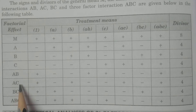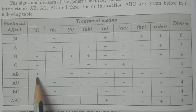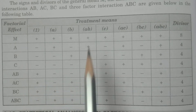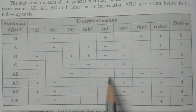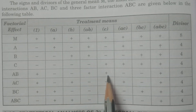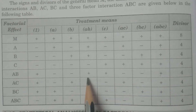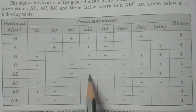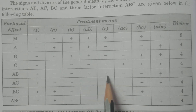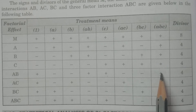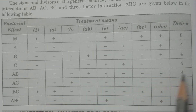Now, coming to interaction AB: the treatment 1 is plus, AB is plus, C is plus, and ABC is plus — having the plus sign. The remaining — A, B, AC, BC — are minus. Divisor is 4.